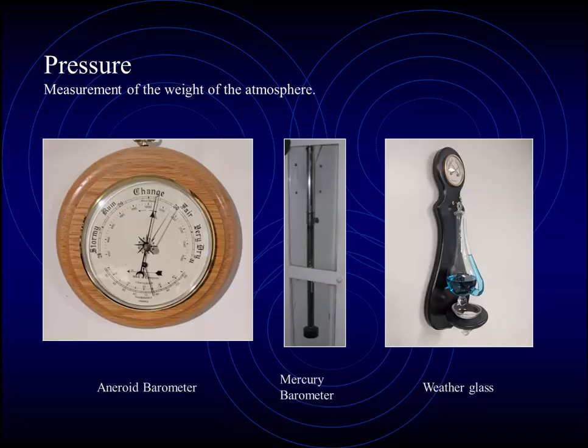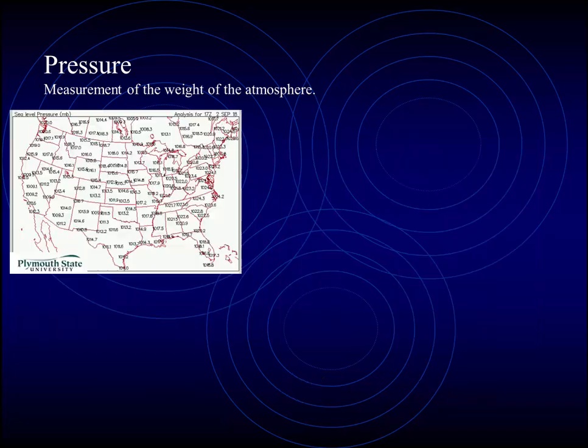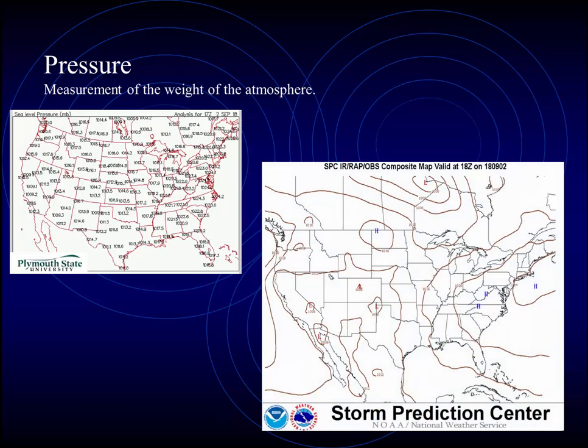Barometric pressure, a measurement of the weight of the atmosphere, can be measured with aneroid barometers, mercury barometers, and even the trends may be measured with something as simple as a weather glass. Numeric pressure data, plotted out on a map, can be turned into a graphical representation, as we see here.